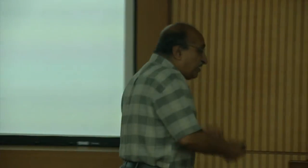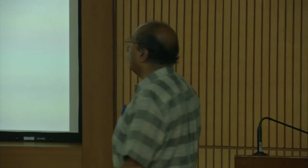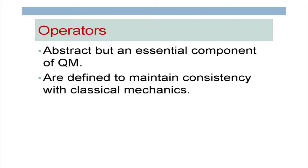We use a lot of abstract concepts in quantum mechanics, so we introduce what we call an operator — a very important concept. As far as this first-year course is concerned, we just give a flavor of operators; we do not talk about matrix mechanics. These operators have to be defined such that quantum mechanics is consistent with classical mechanics, since bigger particles obey Newton's laws of motion.